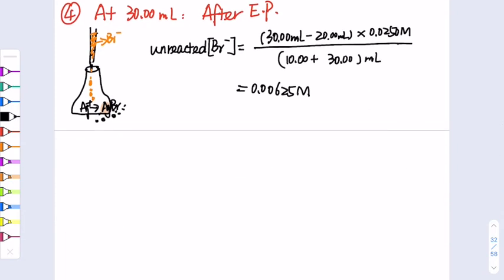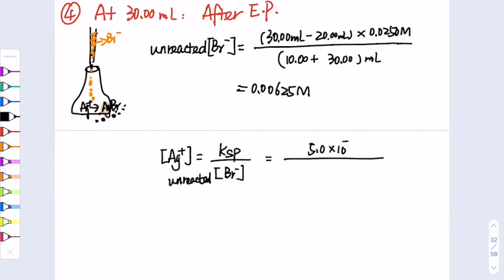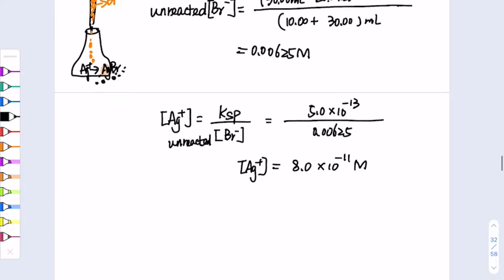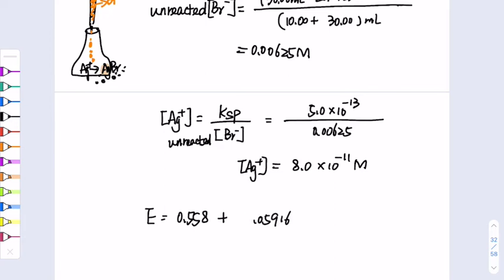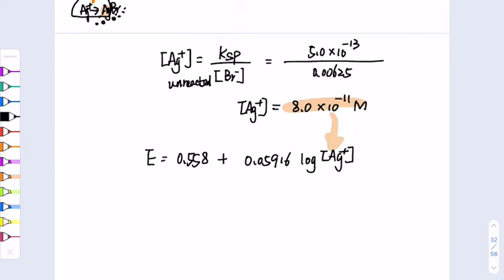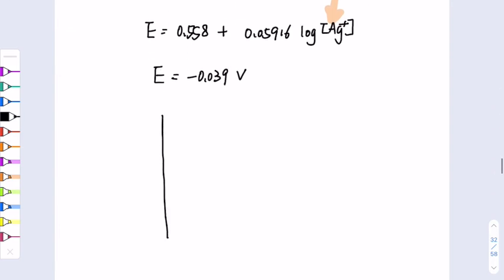Setting up the ICE table with the small approximation, [Ag⁺] = Ksp / [Br⁻] = (5 × 10⁻¹³) / 0.00625 = 8.00 × 10⁻¹¹ M. Plugging into the equation: E = 0.558 + 0.05916·log(8.00 × 10⁻¹¹) = −0.039 V.